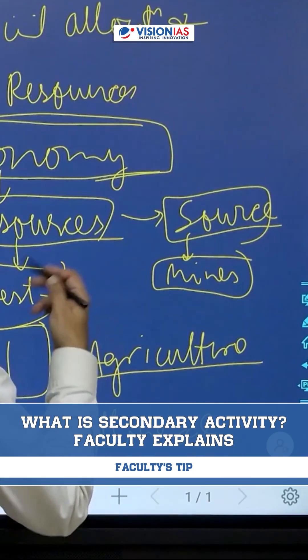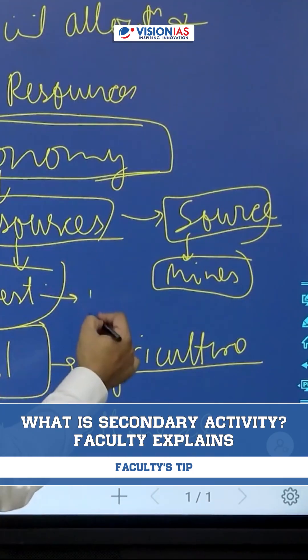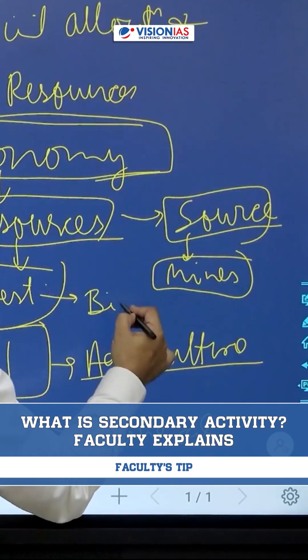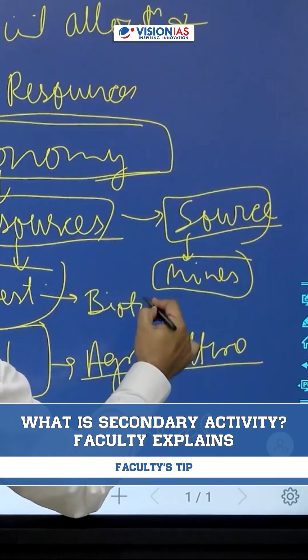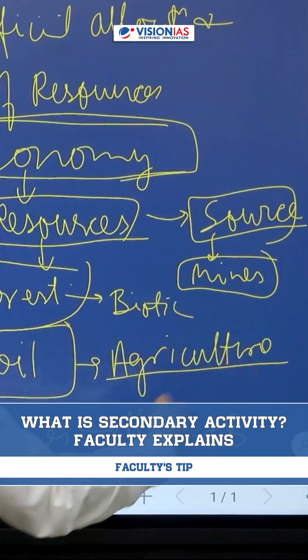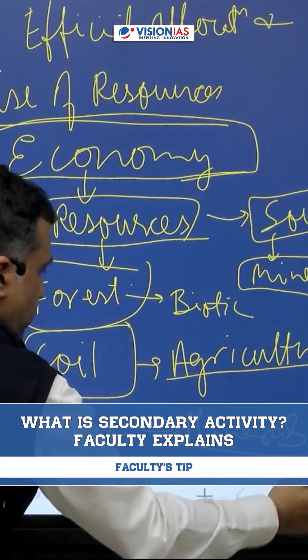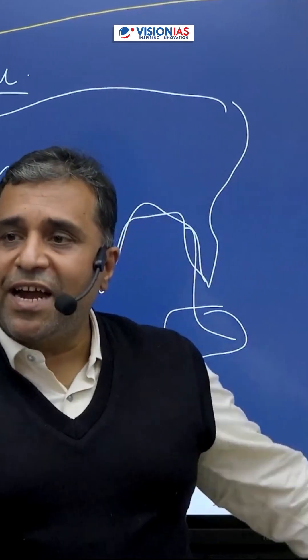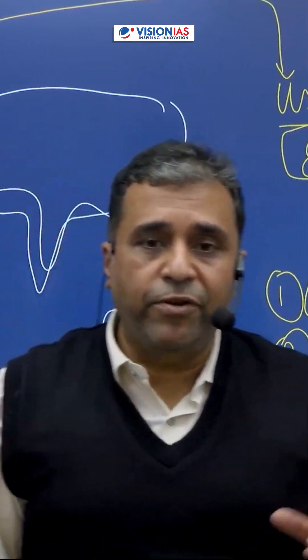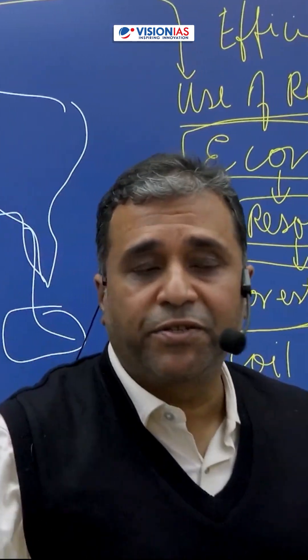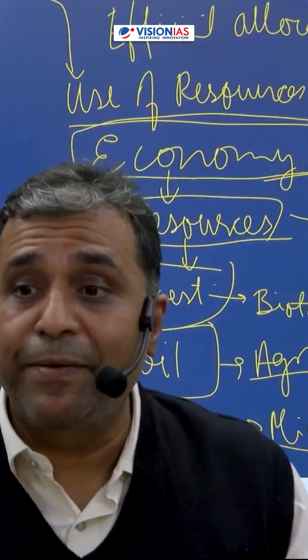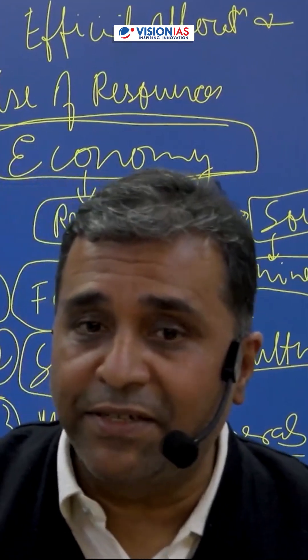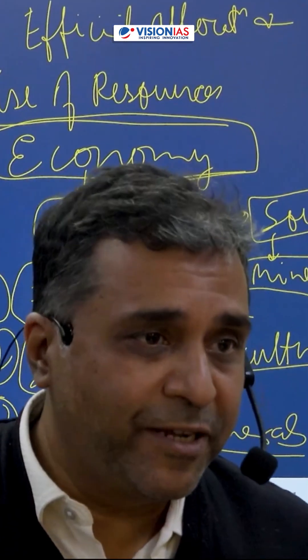Forest gives you the biotech resources, agricultural resources, or mineral resources. These three activities together, where you just get the resources, you call them as primary activity. That's the definition of primary activity.